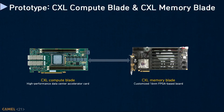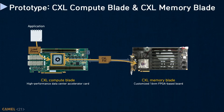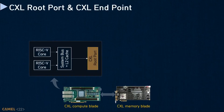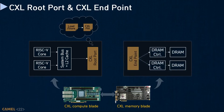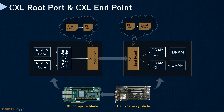We prototype the CXL CPU on a high-performance accelerator card and the CXL memory device on a customized FPGA board. When an application running on the CXL CPU issues a memory request, the CPU converts the request into a CXL packet called a CXL flit. When the CXL flit arrives at the CXL memory device, it converts the flit back to a memory request and serves it using the underlying DRAM. The CXL CPU implements a CXL root port, which extends the PCI root port with CXL support. In case of a cache miss, the CXL root port converts the memory request into a CXL flit. The CXL memory device implements a CXL endpoint, which extends the PCIe endpoint with CXL support, converting incoming CXL flits into memory requests that the memory controller can understand.